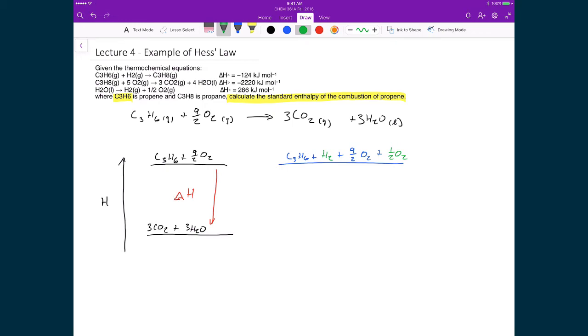And what I know is that I can take that mole of hydrogen, and then I can convert my propene into propane, which is what this first thermochemical reaction tells me I can do. And if I do that, then the system loses 124 kilojoules per mole, which is what basically this thermochemical reaction is telling us. And what I have at this level is C₃H₈ plus 9/2 O₂ plus 1/2 O₂ again.